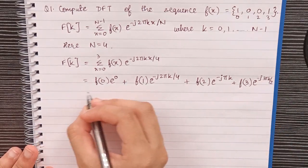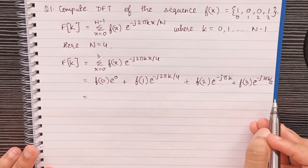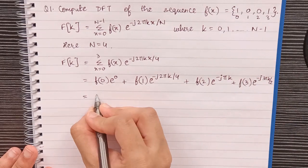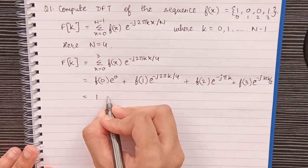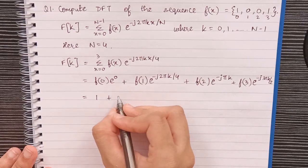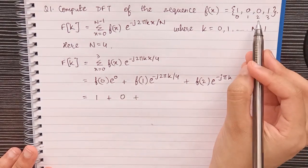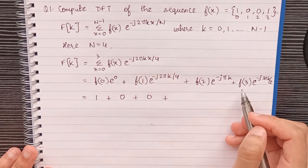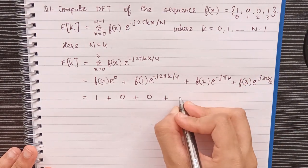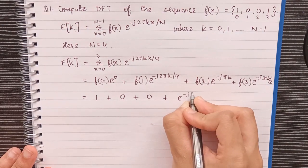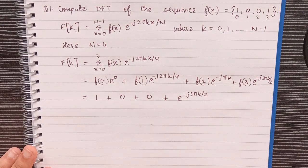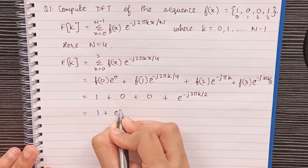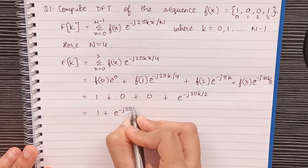Now we simplify and substitute the values. f(0) = 1, so we write 1·e^0 = 1. f(1) = 0, so this term becomes 0. f(2) = 0, so this term is also 0. f(3) = 1, so we have e^(−j3πk/2). Our function becomes: F(k) = 1 + e^(−j3πk/2).